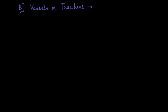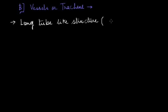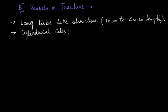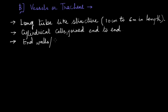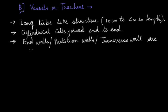We are familiar with one type of xylem element, i.e. tracheids. The second type of xylem elements includes vessels, also known as trachea. These are long tube-like structures ranging from 10 cm to 6 m in length. Vessels are made up of numerous cylindrical cells arranged end to end, and the end walls, also called partition walls or transverse walls, are absent or perforated due to dissolution.